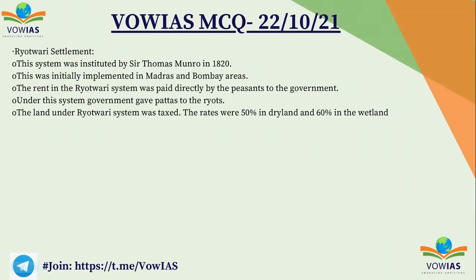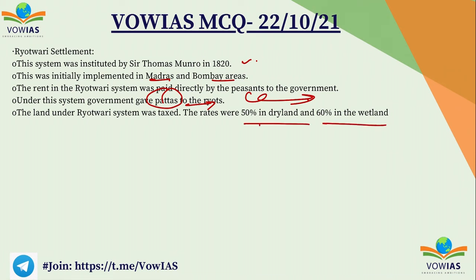Some basic information on the Ryotwari system: it was instituted by Sir Thomas Munro in 1820 and was initially implemented in the Madras and Bombay Presidency areas. The rent was paid directly by the peasants to the government, and the government gave patas to the ryots. The land under the ryots was taxed at high rates — approximately 50% in dry land areas and 60% in wetland areas.